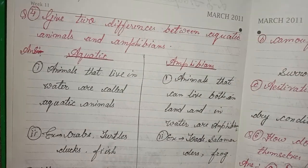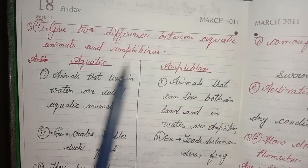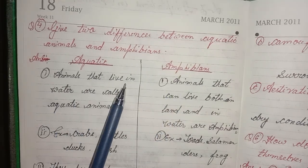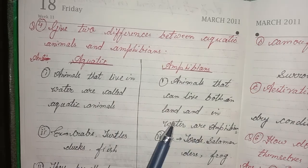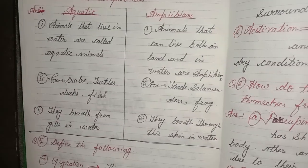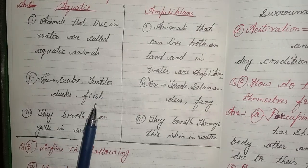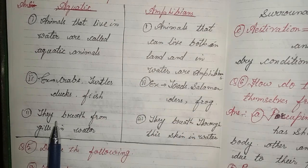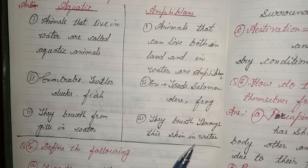Fourth question: give two differences between aquatic animals and amphibians. Aquatic animals: animals that live in water are called aquatic; for example crab, turtle, duck, fish; they breathe from gills in water. Amphibians: animals that can live both on land and in water are amphibians; for example toads, salamanders, frogs; they breathe through their skin in water.